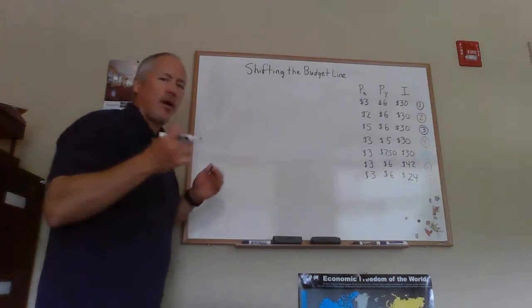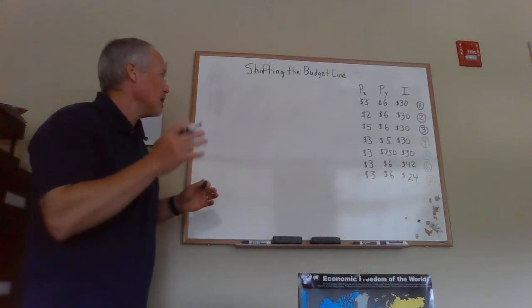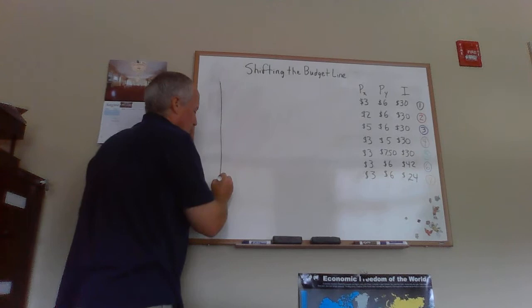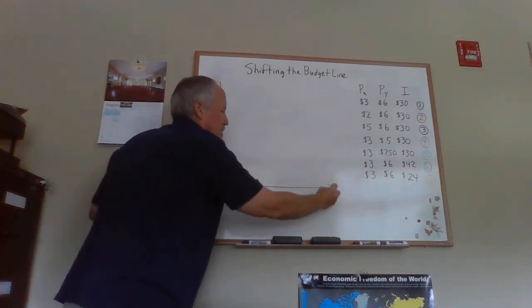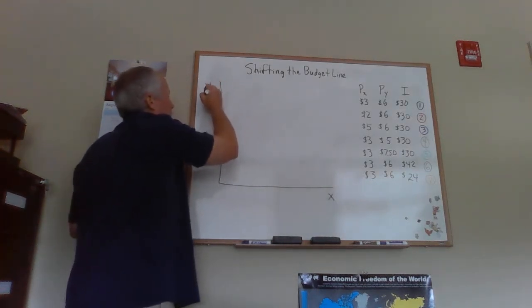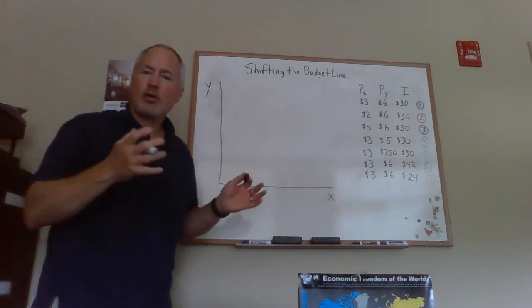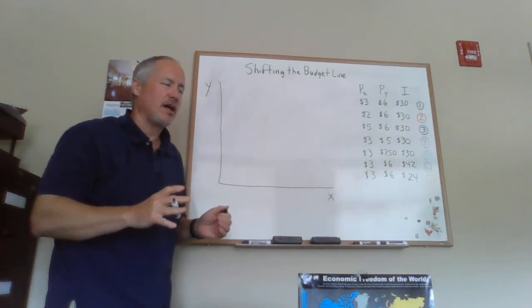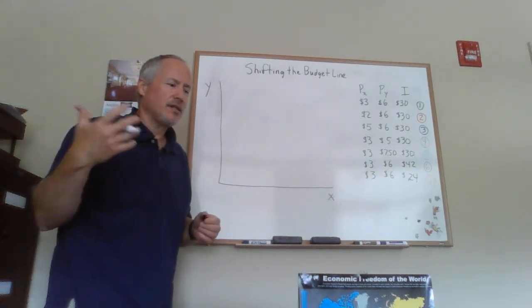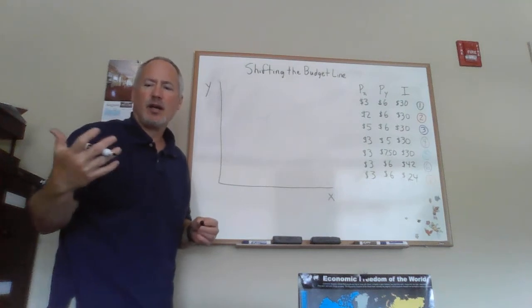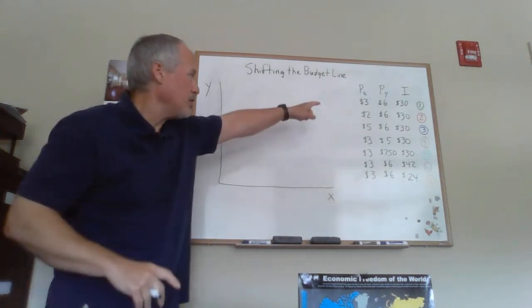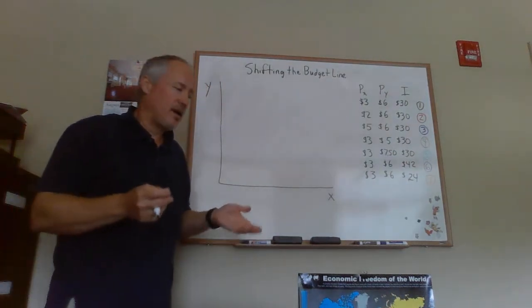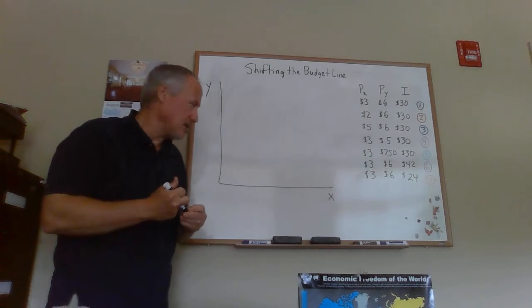This video is going to cover how we shift the budget line, how the budget line will shift and pivot when prices or incomes change. This is an example that we'll have gone over in class. There's a slide which is called Shifting the Budget Line, and all of this information is there on that slide. So I'm just going to recreate what I will have done in class.